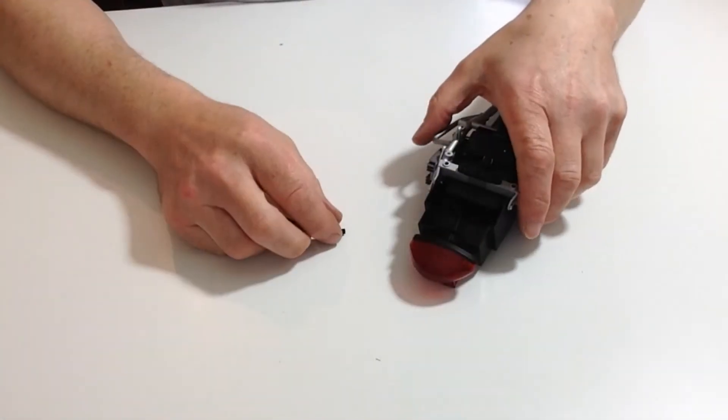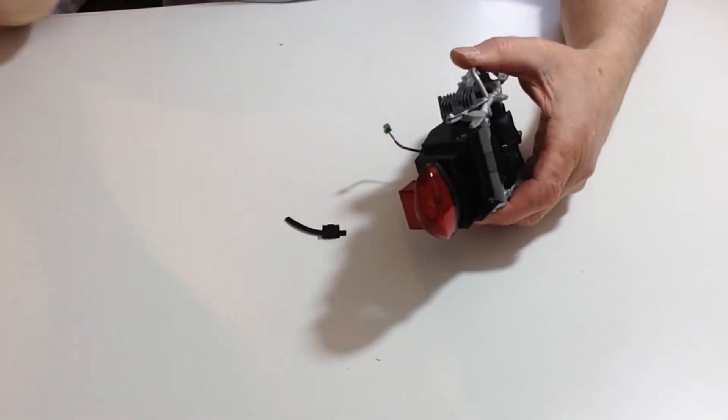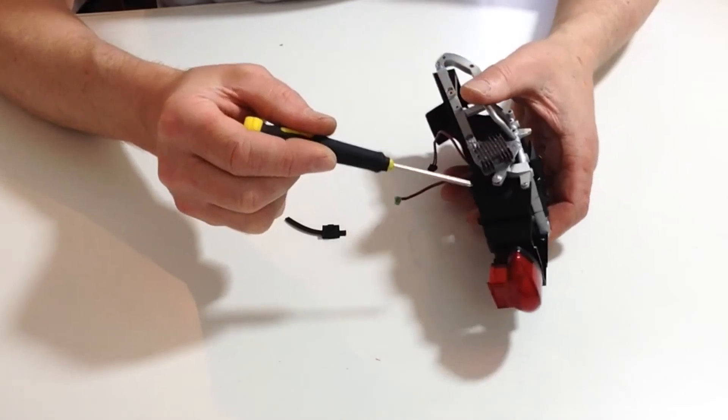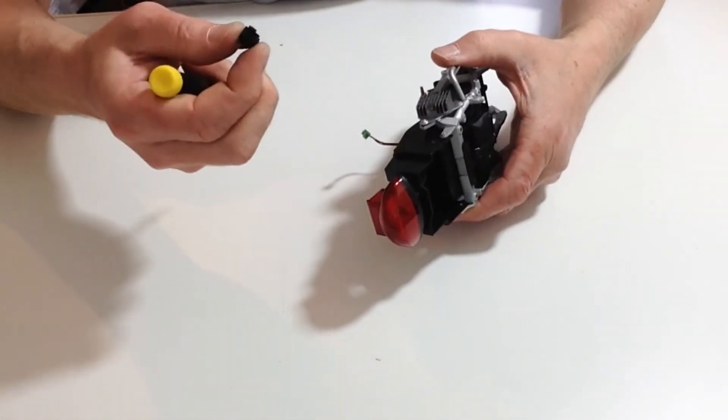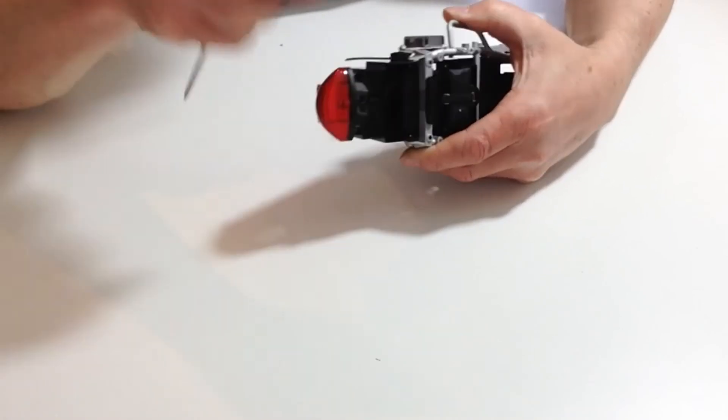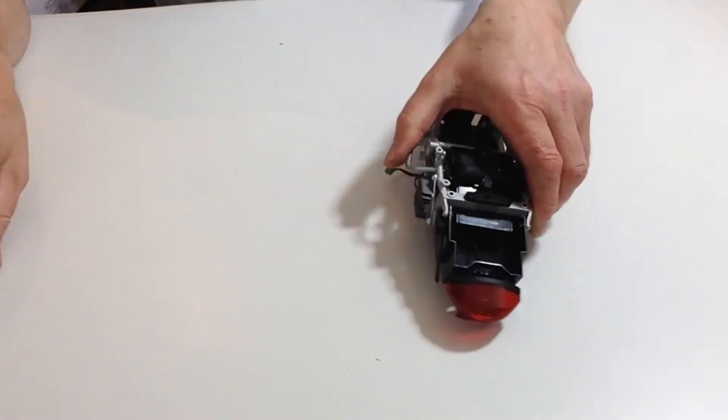Next, take the connector socket and you will notice that you have two protrusions. Line those up and press it down into position until the connector socket is in place.